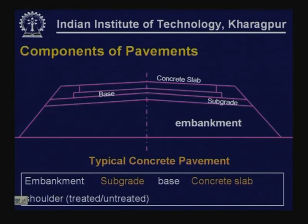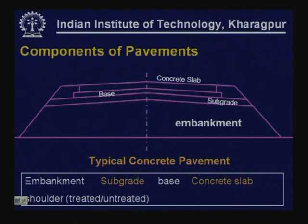A typical concrete pavement has embankment, subgrade, base, and the concrete slab, and will also have shoulders. This may be on embankment or in cutting. The concrete slab may or may not have a base, but nowadays for high-traffic roads we normally provide a granular base also. So here we use aggregates for different components — concrete requires aggregates, base requires aggregates, and shoulders may also use aggregates.